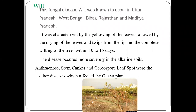Wilt disease is a fungal disease occurring mostly in Uttar Pradesh, West Bengal, Bihar, Rajasthan, and Madhya Pradesh. It is characterized by yellowing of leaves followed by drying of leaves and twigs from the tip, with complete wilting of the tree within 10 to 15 days of severe attack. The disease mostly occurs in alkaline soils.